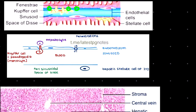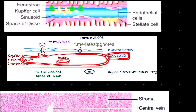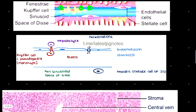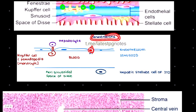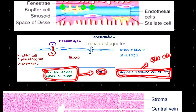Looking at the diagrammatic representation: the sinusoids are filled with blood and lined by fenestrated endothelium. Kupffer cells with pseudopodia are present for attacking antigens. The peri-sinusoidal space of Disse contains hepatic stellate cells of Ito, which absorb vitamins A and D.